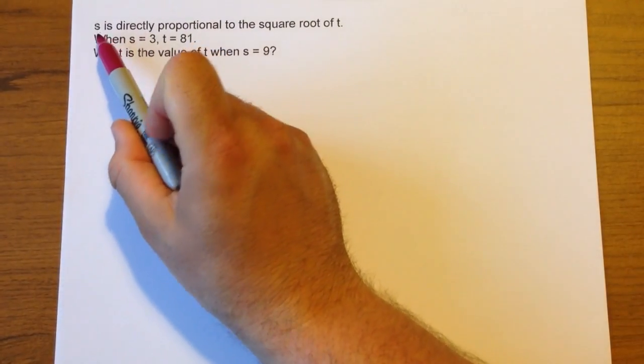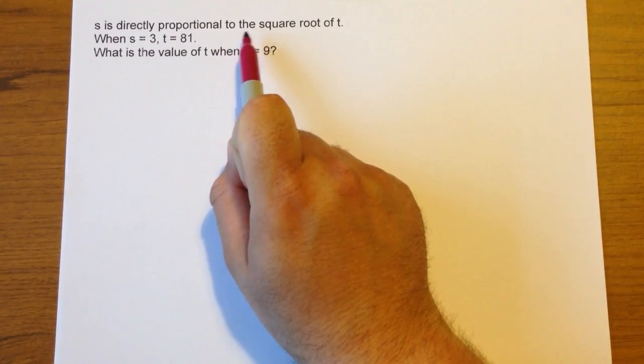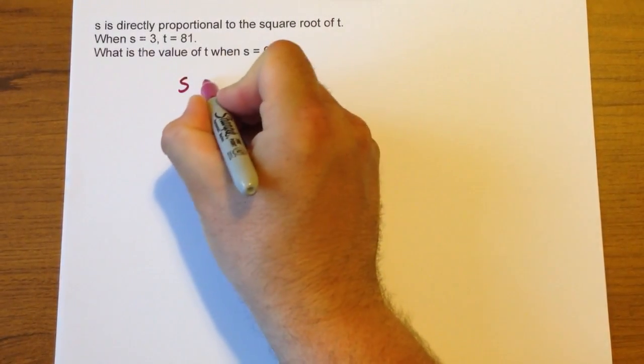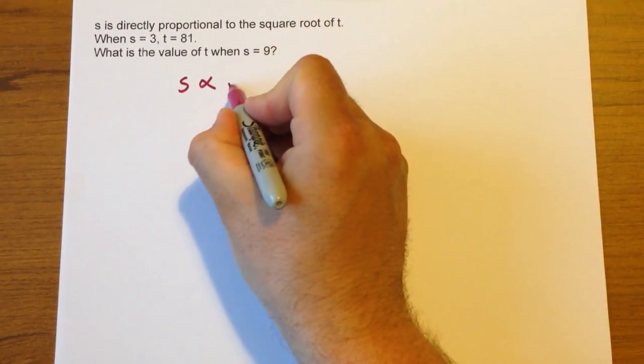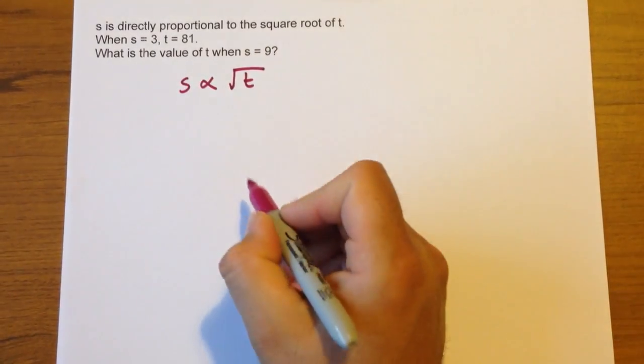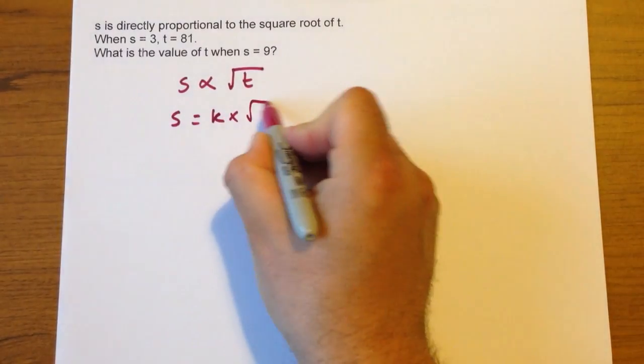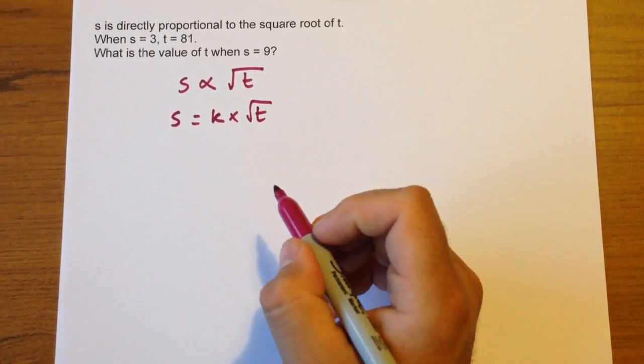This is an example when s is directly proportional to the square root of t. So our first statement is s is proportional to square root of t, which means s equals k multiplied by square root of t.